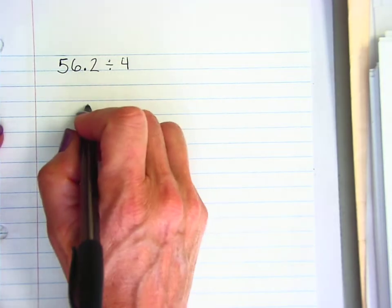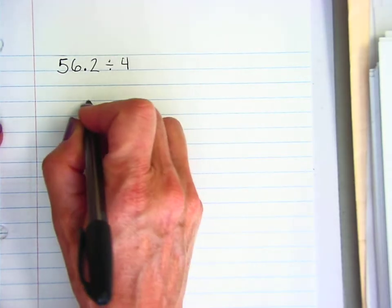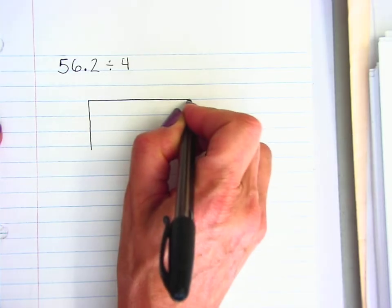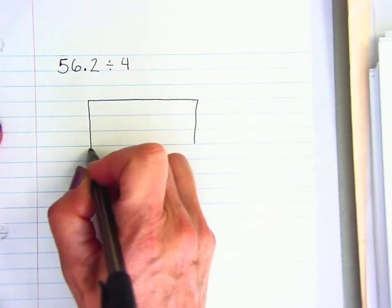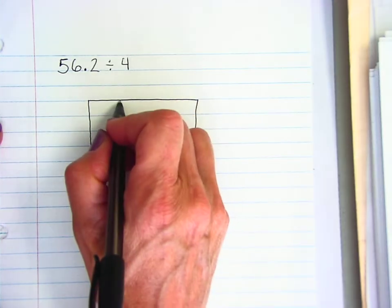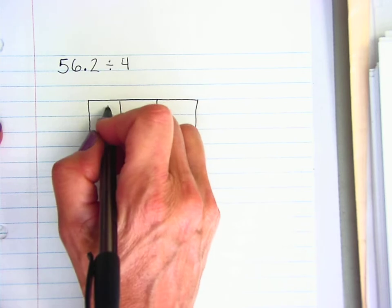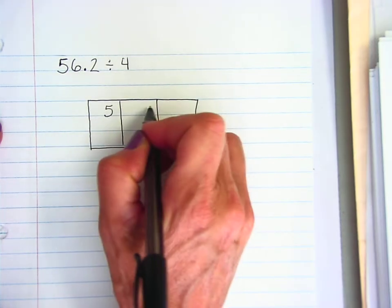So first I'm going to make a box. I want to make it three rows high and long enough to fit my number with a little bit of extra space. I have a three-digit number so I need to make three sections in my box and I put each digit in its own box.